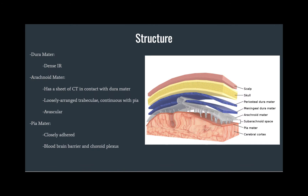Before diving into the histological images, I want to discuss the general structure and orientation of the meninges. The dura mater is comprised of two components: the outer periosteal layer and the inner meningeal layer. This image is somewhat misleading because the two layers are usually functionally fused, but they do expand in some regions of the brain to form the dural venous sinuses.